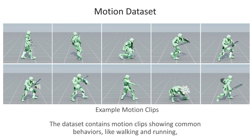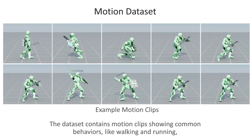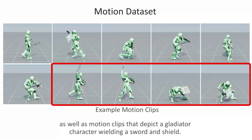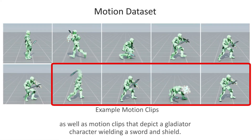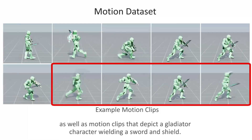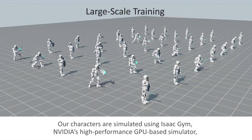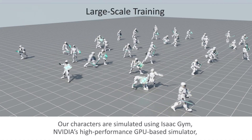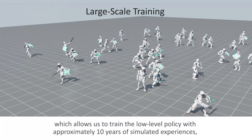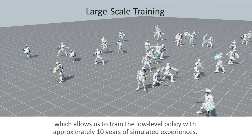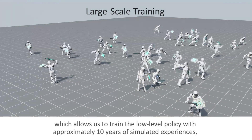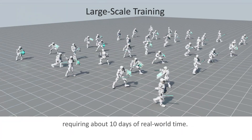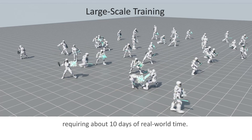The dataset contains motion clips showing common behaviors like walking and running, as well as motion clips that depict a gladiator character wielding a sword and shield. Our characters are simulated using Isaac Gym, NVIDIA's high-performance GPU-based simulator, which allows us to train the low-level policy with approximately 10 years of simulated experience, requiring about 10 days of real-world time.